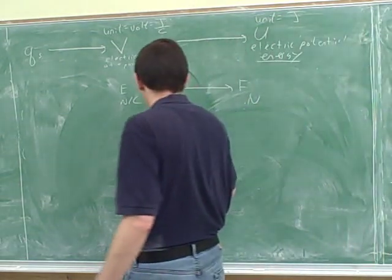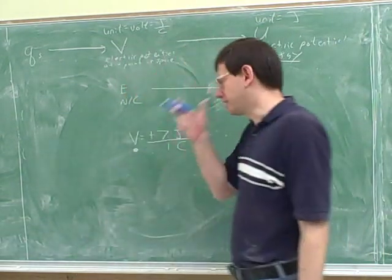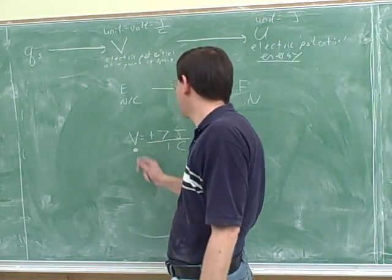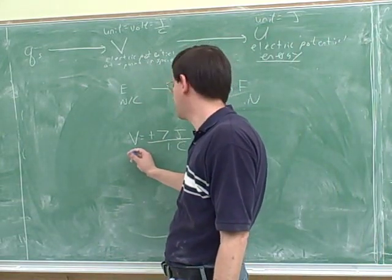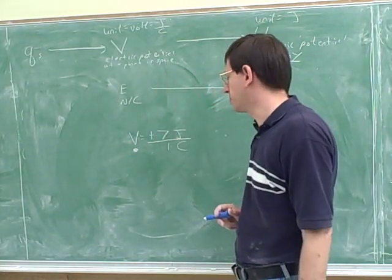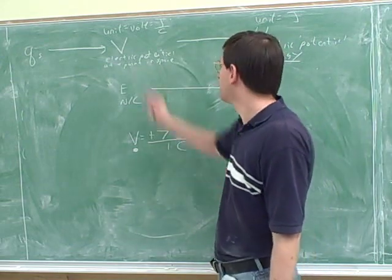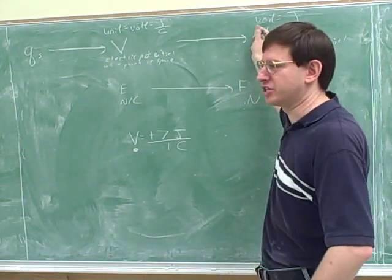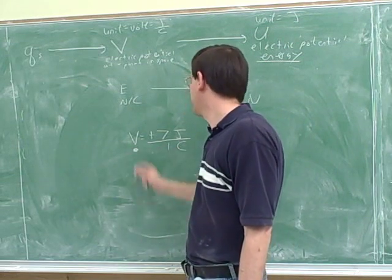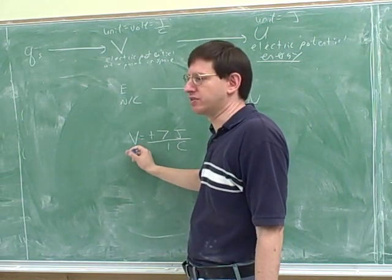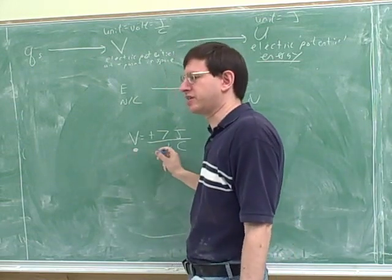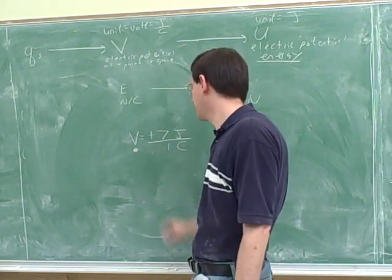So you're using the trick of putting the number one down here. This tells us that if we put a positive one coulomb test charge here, it would have a potential energy of seven joules. That's the most straightforward way to think about it without thinking about work because we know the potential determines the energy. So if we put a positive one coulomb charge here, it would have an energy of positive seven joules. That doesn't mean there really is a one coulomb charge here. This is just hypothetical. But you can see that this should be really quite useful.